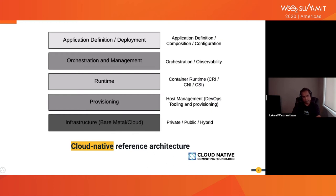The runtime layer mainly consists of three components: CRI (container runtime interface), CNI (container network interface), and CSI (container storage interface). CRI allows us to plug in different implementations of container runtimes. Docker is a widely used container runtime, and alternatively we can use CRIO, the open container initiative compatible runtime, or the Rocket container runtime introduced by CoreOS.